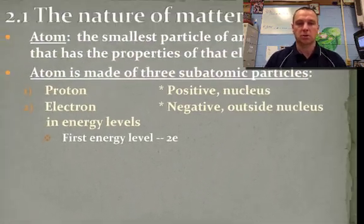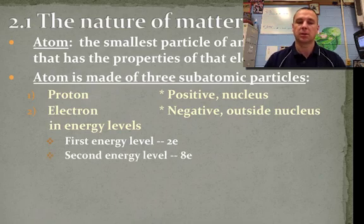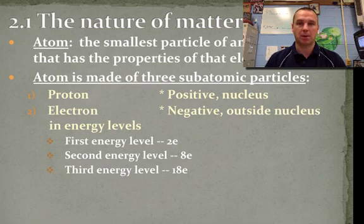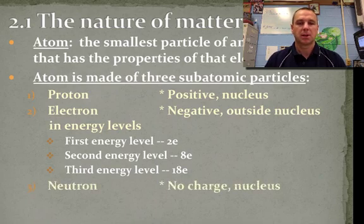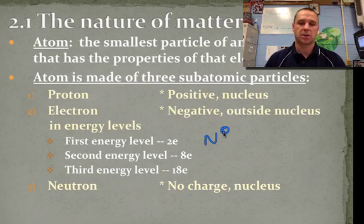So if you had an atom that had 11 electrons, it would have another energy level and so on. The first energy level holds two, the second energy level holds eight, and the third energy level holds 18. Now, the third subatomic particle is a neutron. A neutron has no charge, but it's also found in the nucleus, and we would write it as an N with a zero on top of it.